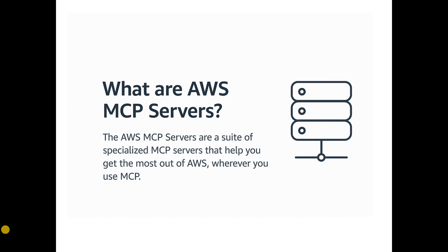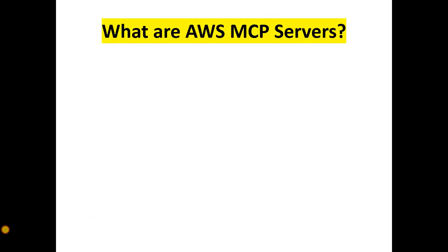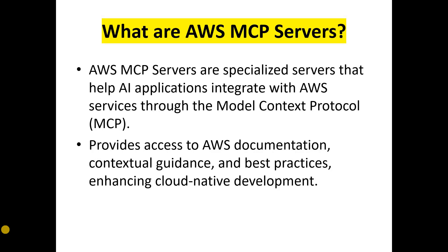AWS MCP servers are a suite of specialized MCP servers that help you get the most out of AWS wherever you use MCP. These specialized servers help AI applications integrate with AWS services through MCP, that is Model Context Protocol. MCP servers provide access to AWS documentation, contextual guidance, and best practices, which enhances cloud-native development.